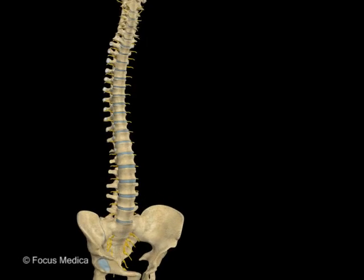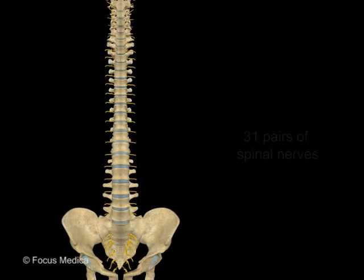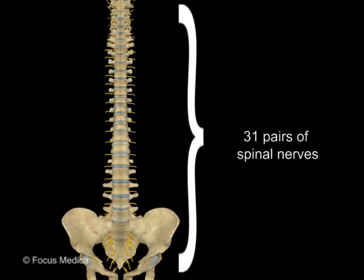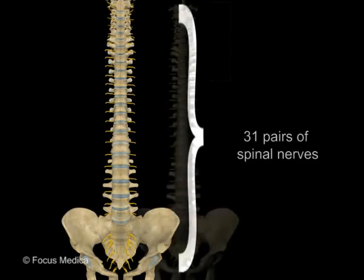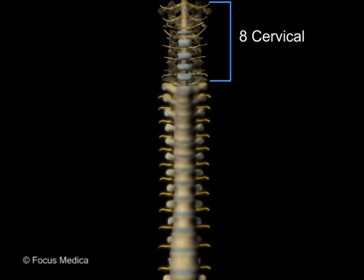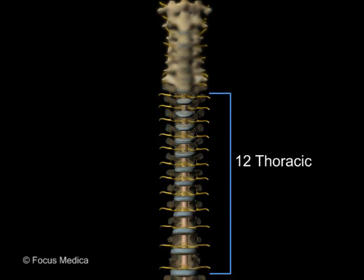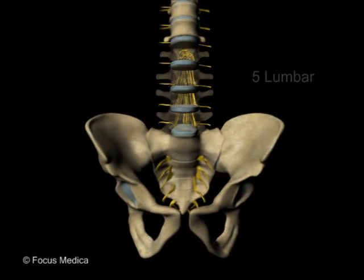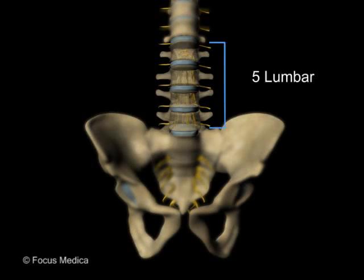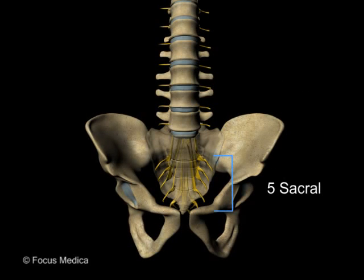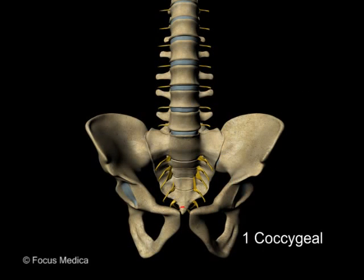There are 31 pairs of spinal nerves: eight cervical, twelve thoracic, five lumbar, five sacral, and one coccygeal.